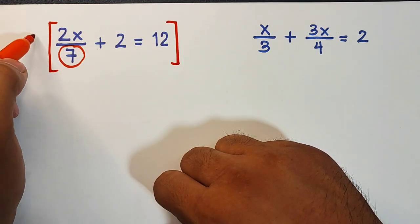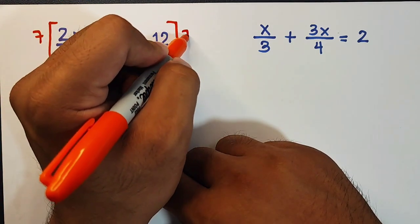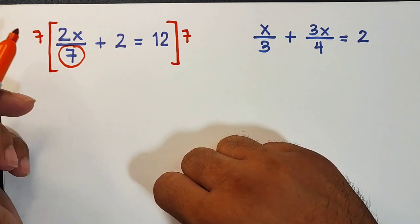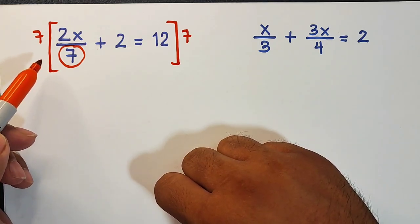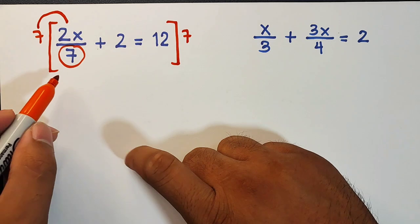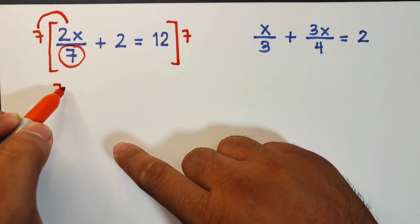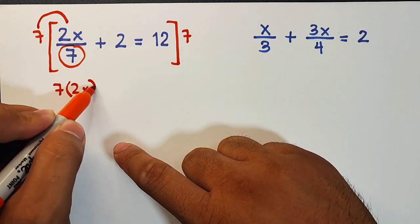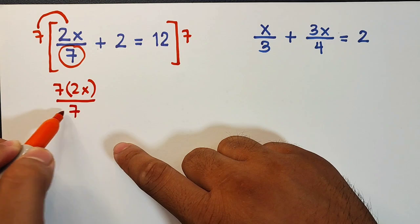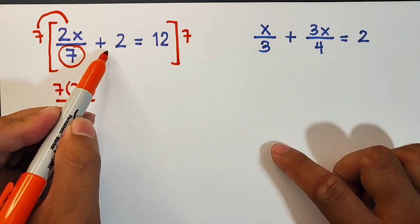So what we need to do is use the distributive property. We will multiply this, so this will become 7 times 2x over 7, and then for the other term you will also multiply it by 7—plus 7 times 2—equal to 12 times 7.